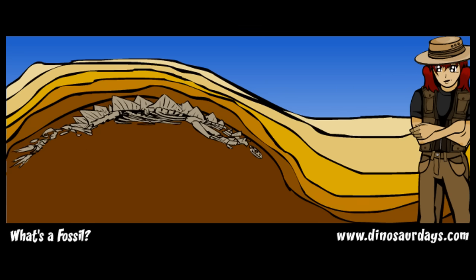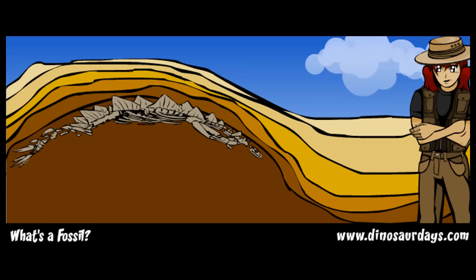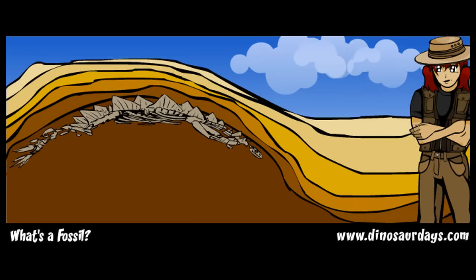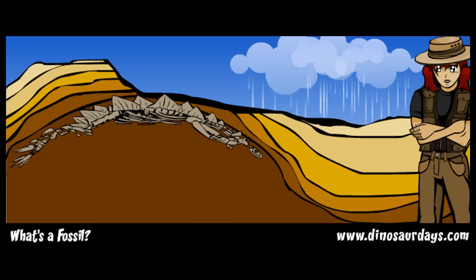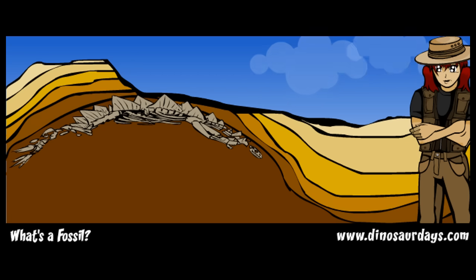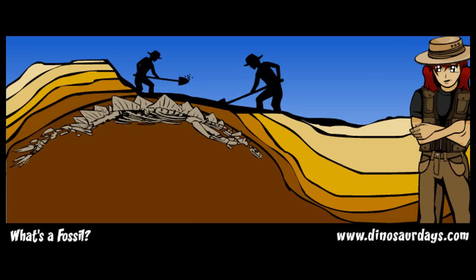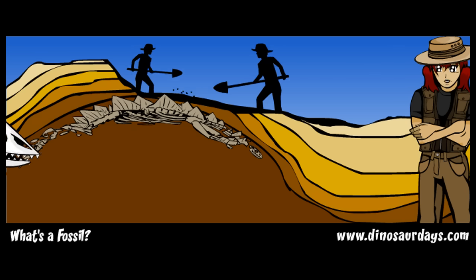Many years later, the rock surrounding the skeleton rises to the earth's surface. This can happen during an earthquake or as mountains rise naturally. The top layers of rock are worn away by wind and rain. Slowly, wind and rain show the fossils to the outside world. Not all fossils rise to the surface — many times they remain under layers and layers of rock, and paleontologists have to dig a long time to find them.